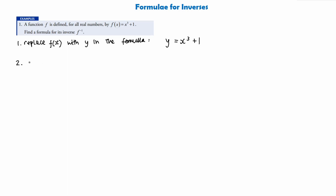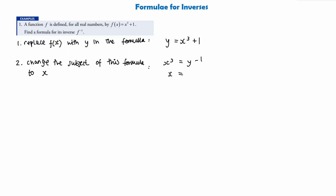Step two is changing the subject — we learned about this at National 5. We're going to change the subject of the formula to find x on its own. Rearranging: x cubed equals y subtract 1, and therefore x equals the cube root of y subtract 1. Step three: interchange x and y — anywhere there's an x change it to a y, and anywhere there's a y change it to an x. This line now reads y equals the cube root of x minus 1.